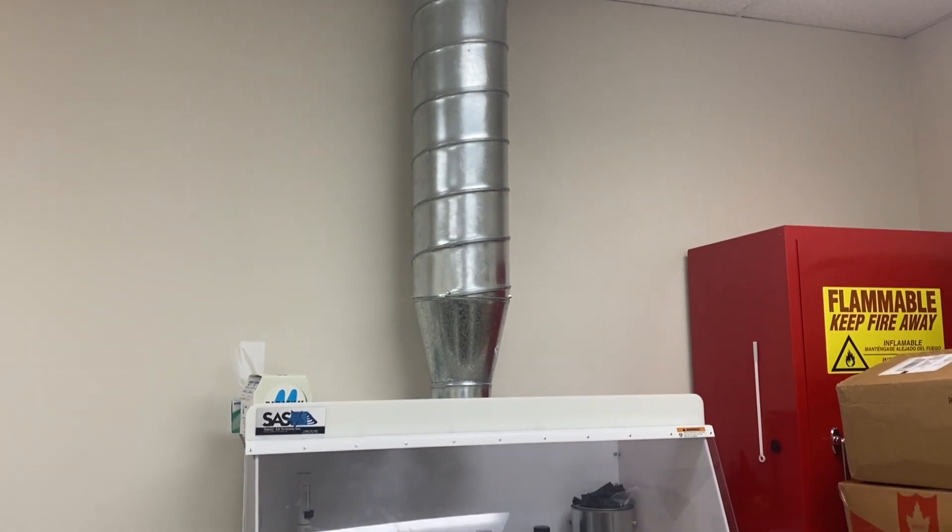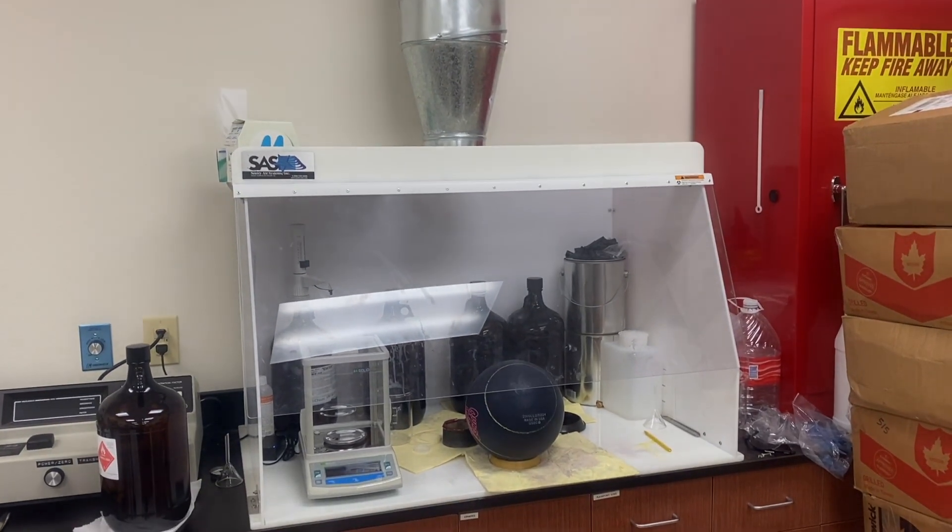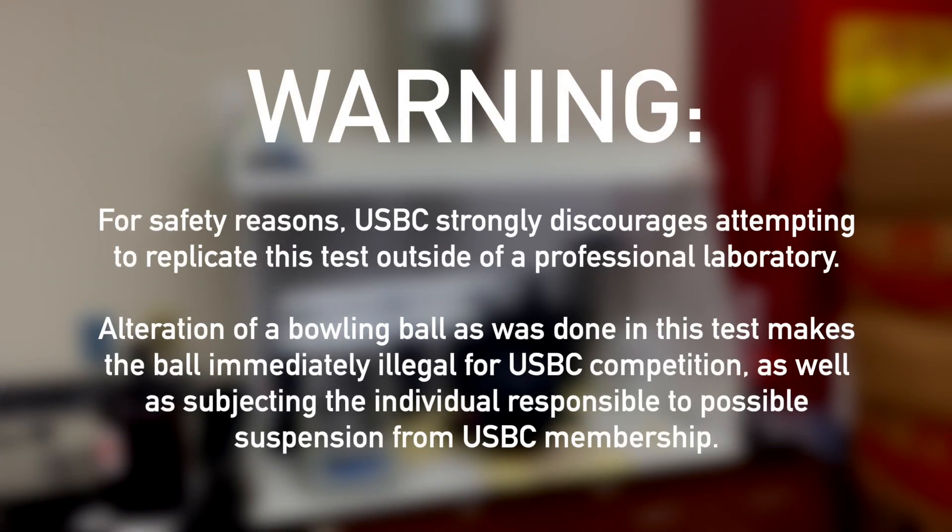The next and final test involved investigating the change in hardness, footprint, and total hook related to chemically altering bowling balls of different types, including urethane, reactive, and polyester models by soaking them in methyl ethyl ketone, or MEK.